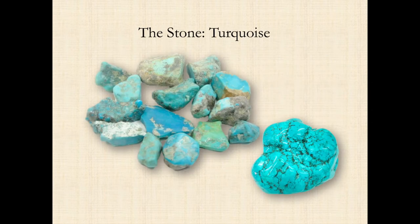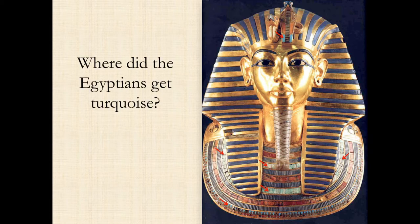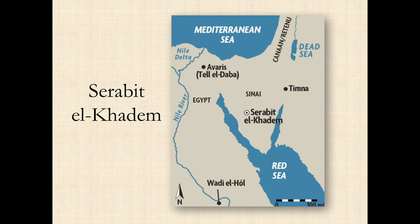Now the stone is turquoise. You can see it here in this very famous mask of Tutankhamun. The question is, where did the Egyptians get turquoise? The answer is pretty simple — the Egyptians got turquoise in Egypt. But in particular, the place they got it from is called today Serabit al-Khadem, right here in the middle of the Sinai Peninsula.